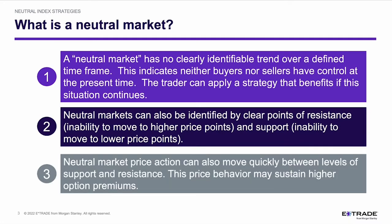Neutral price market action can often move quickly between levels of support and resistance. This price behavior may sustain higher options premiums. If we're at the floor, we generally think it's going to bounce off and head back up to the ceiling. In this period of time, we generally see large green candles and large red candles as we bounce back and forth between floor support and resistance.